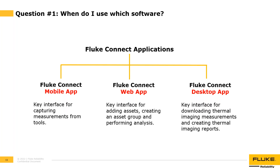Next is the Fluke Connect web app. After using the mobile app to capture measurement readings or thermal images, you go to the web app to analyze the data. It's much easier to see the information on a PC than on your cell phone. This is also where you create assets, asset groups, and asset subgroups. You can also import assets from an Excel spreadsheet. And this is where you manage your team — invite new members or add a second team administrator.